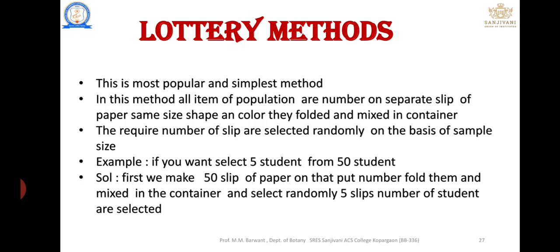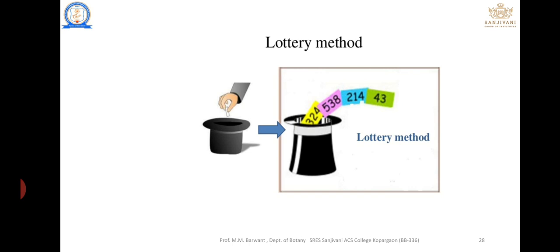For example, if you want to select 5 students from 50, you take 50 slips of paper, number them, fold them, mix them in a container, and select any 5 slips — the numbers on those slips identify the selected students. That is the best example of the lottery method. In this figure we can see the lottery method explanation. In this video we learned about the need for randomness and the methods of achieving randomness — the first being the lottery method. In the next video we will see the random number table method.